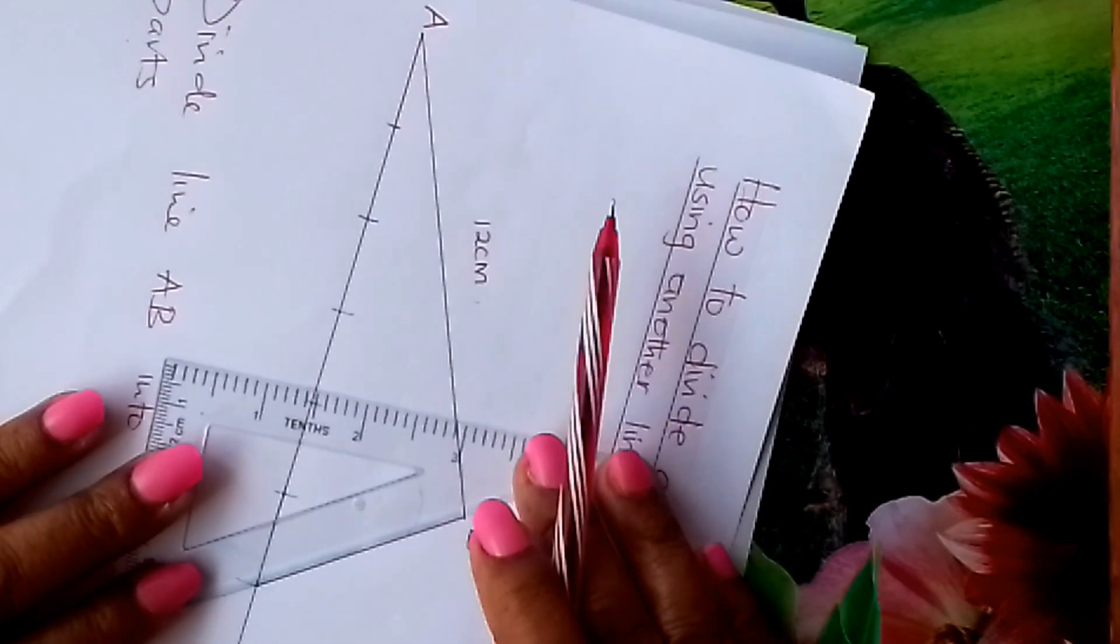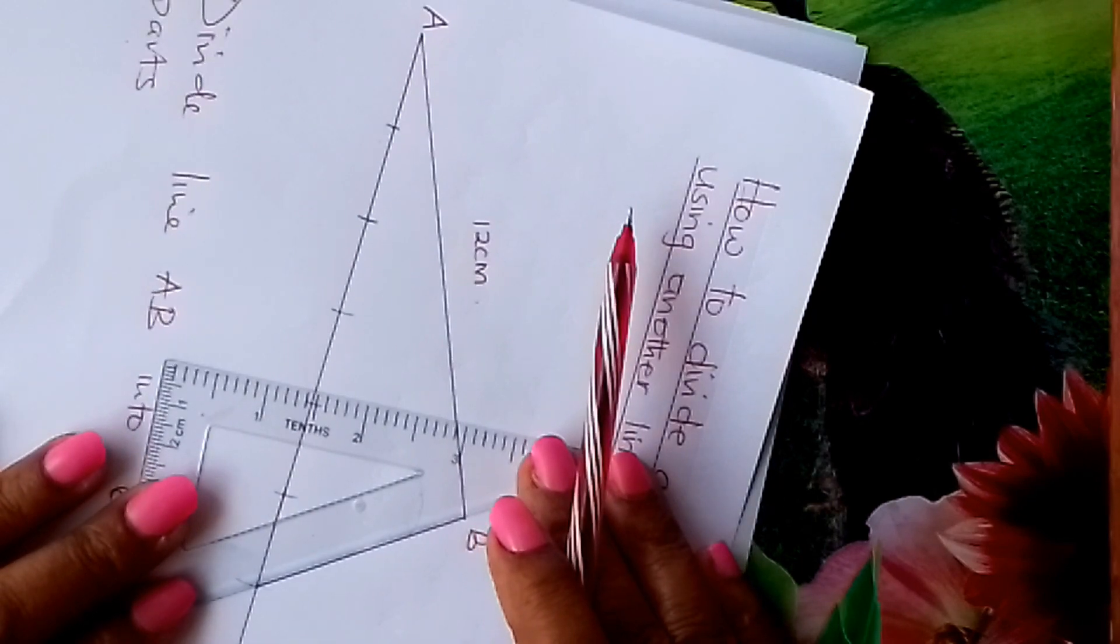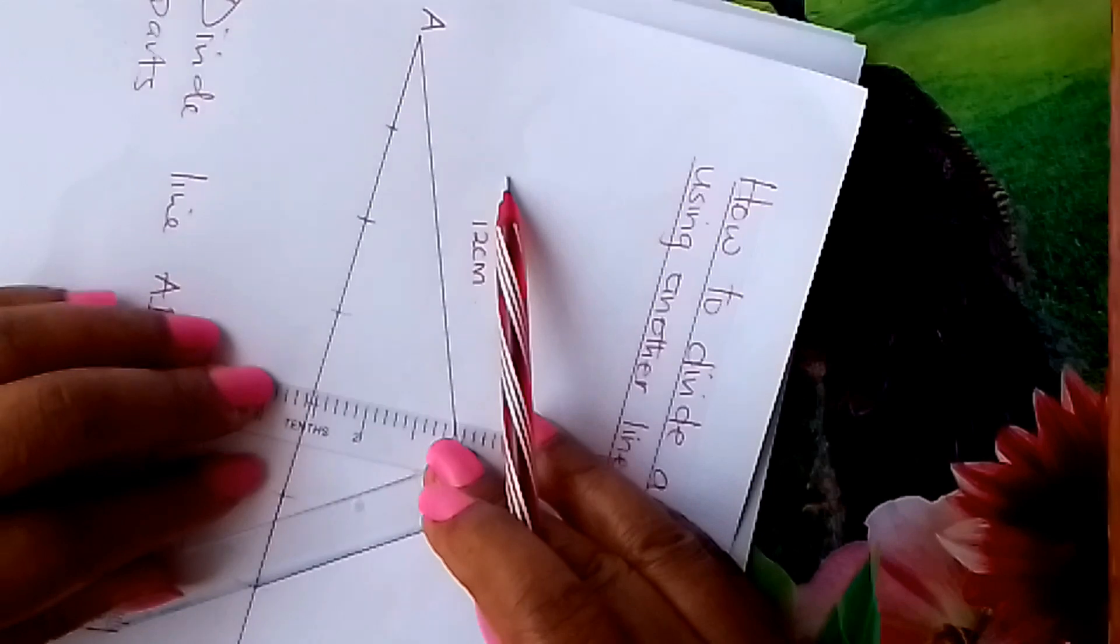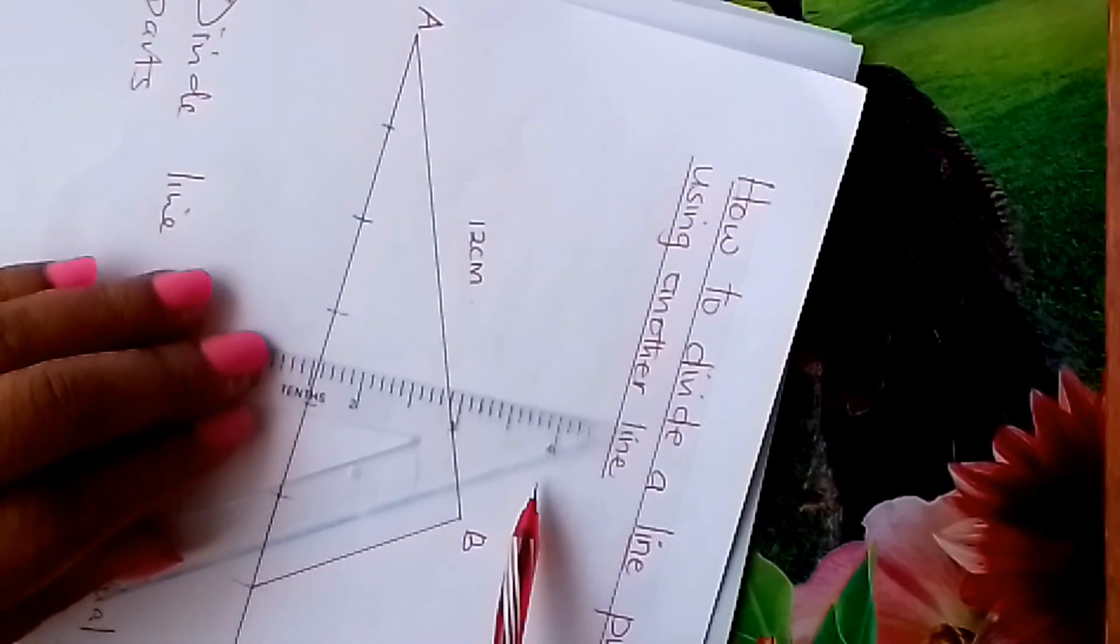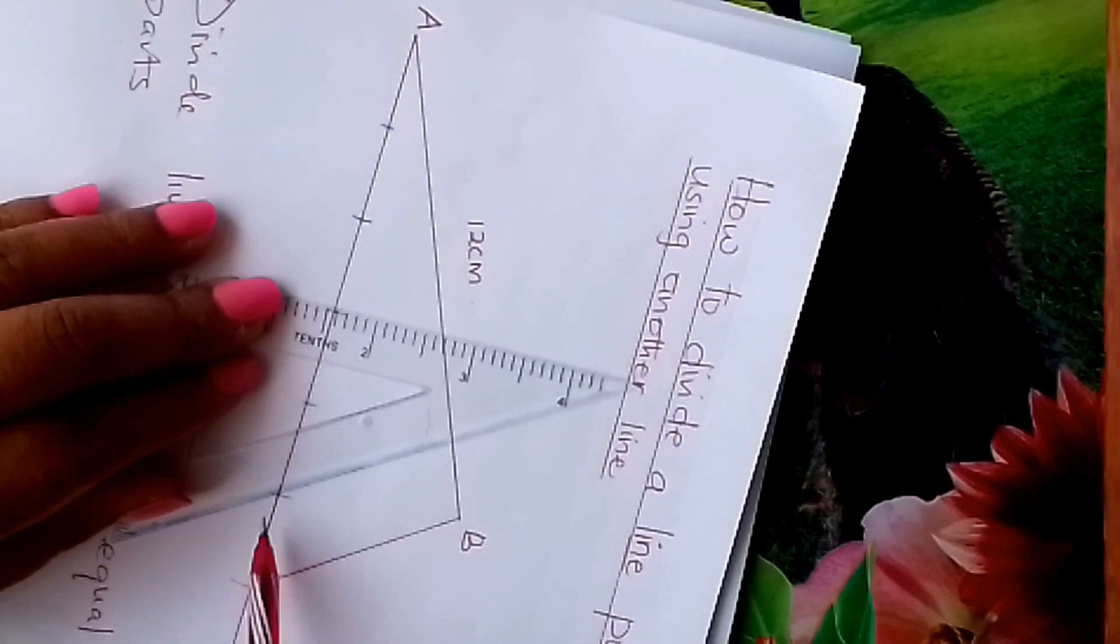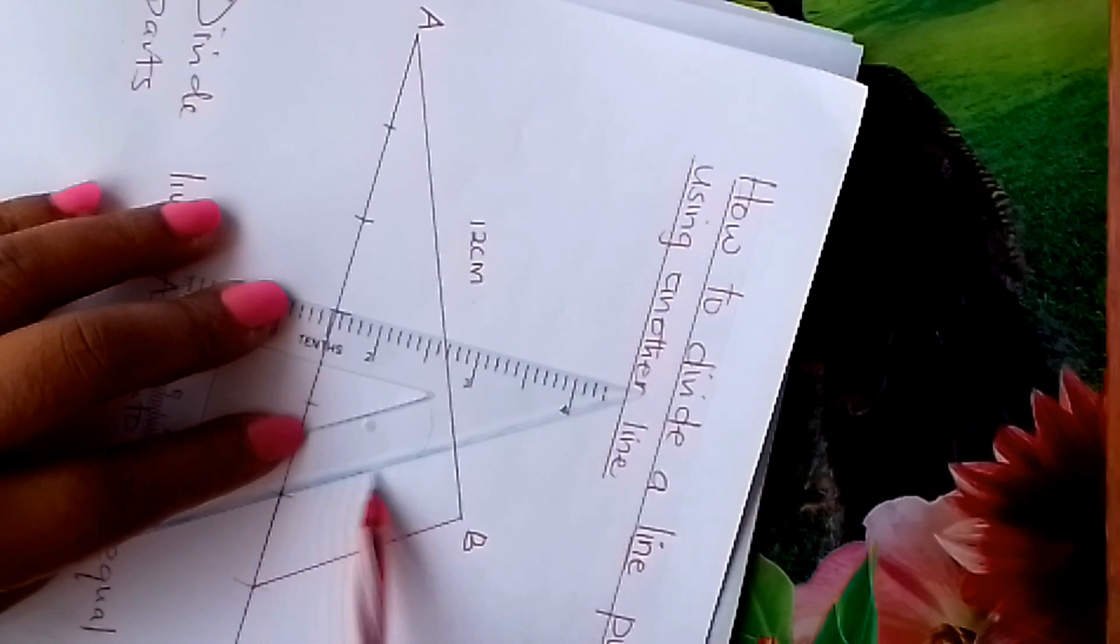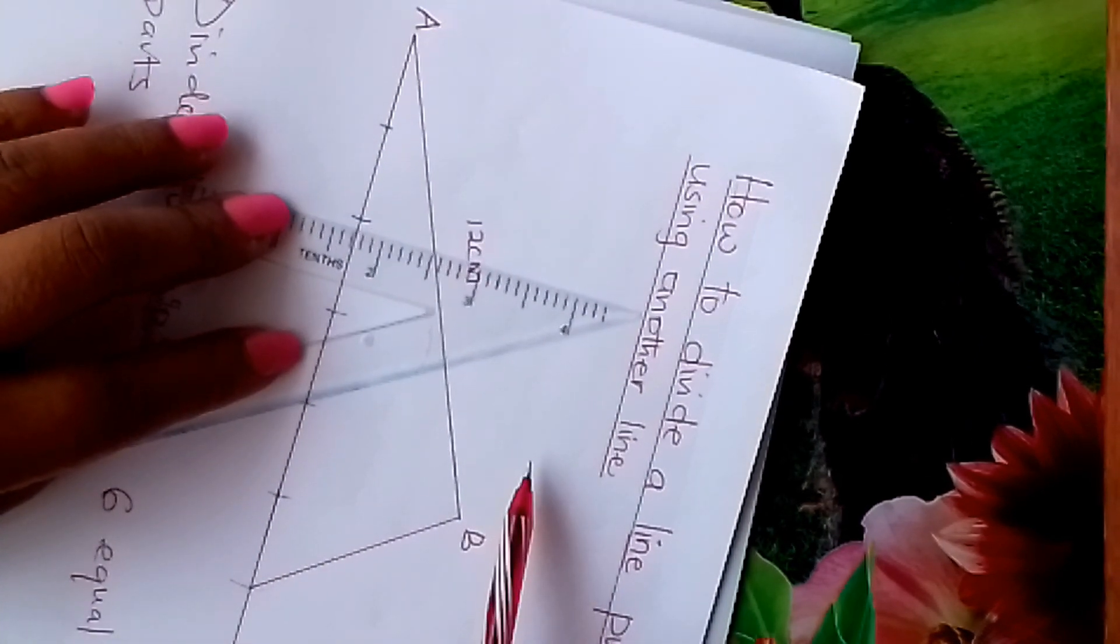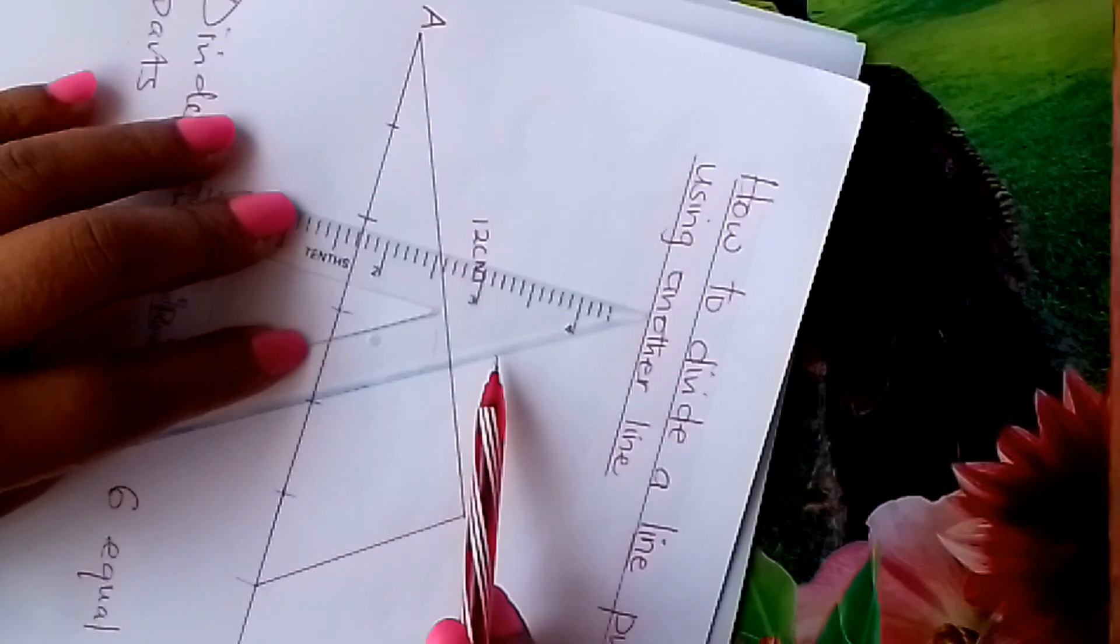Why is it lying there? This is because we want to slide this set square this way. Let me first demonstrate. We slide it this way uniformly. Once we get to this arc we draw a line. Then we slide it again. Once we get to this arc you draw another line.